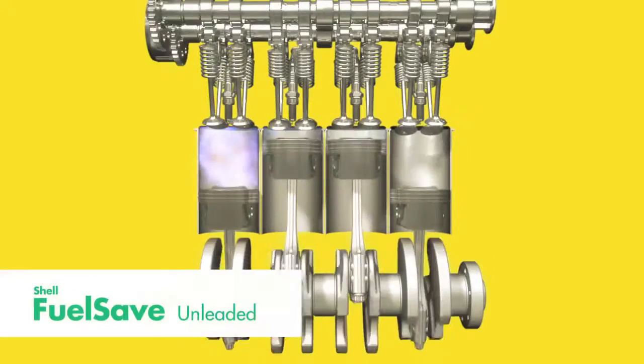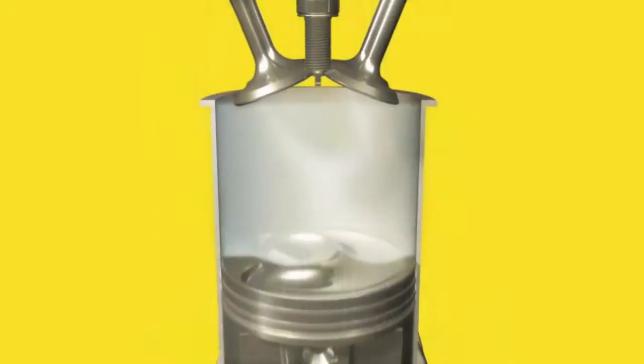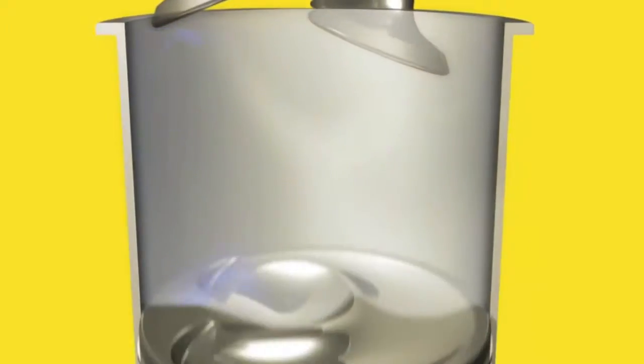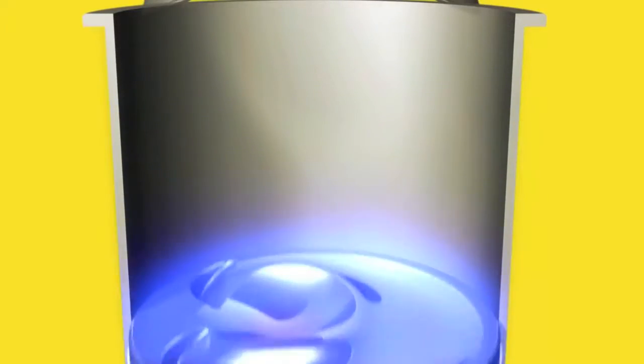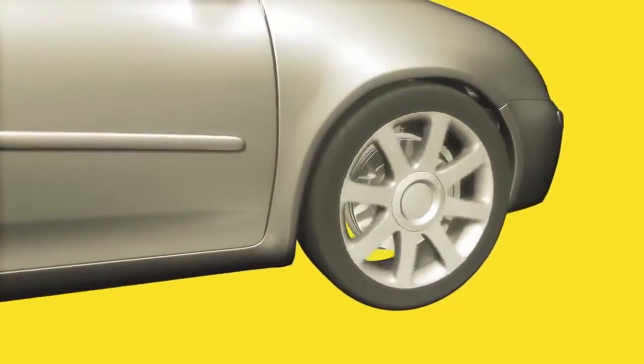Shell Fuel Save Unleaded is enriched with a Shell efficiency improver that reduces energy loss by lubricating where engine oils are less effective, such as the upper piston ring, thereby reducing friction and heat. The Shell efficiency improver helps the engine to turn more freely and make more of the energy available to power the wheels.